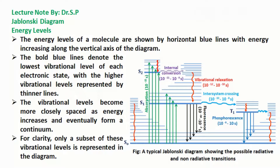The bold blue lines denote the lowest vibrational level of each electronic state, with the higher vibrational levels represented by thinner lines. The vibrational levels become more closely spaced as energy increases and eventually form a continuum. For clarity, only a subset of these vibrational levels is represented in the diagram.